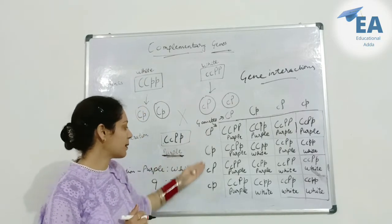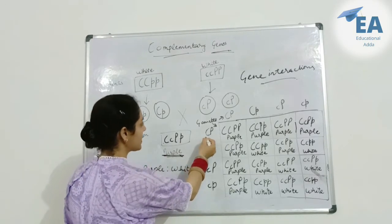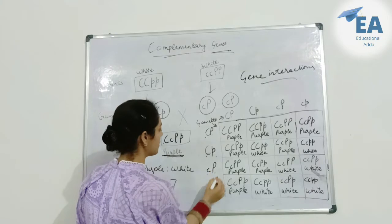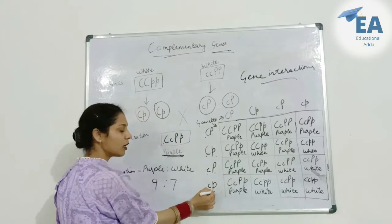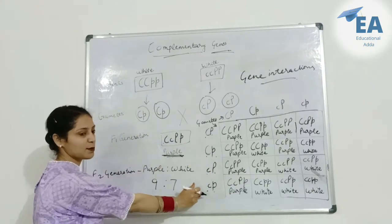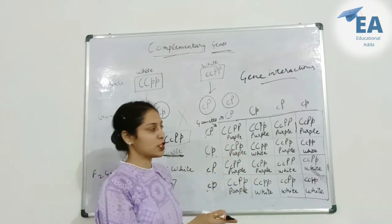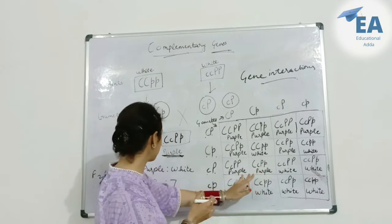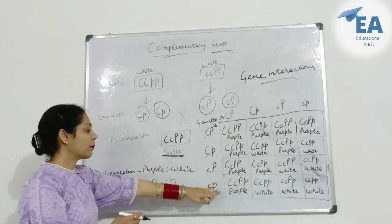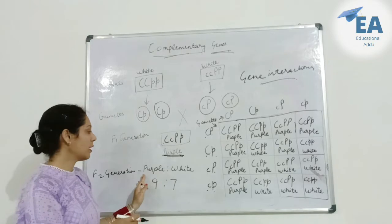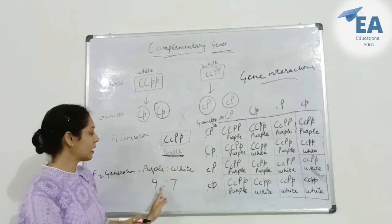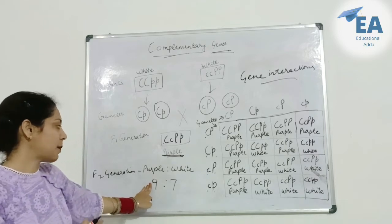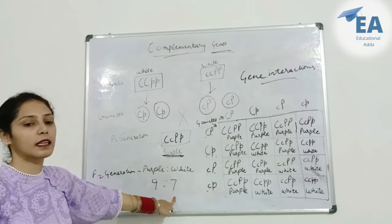In the F2 generation we have four gametes: CP, CP, CP, CP. From the selfing, we get purple and white flowers in a 9 to 7 ratio — nine with purple flowers and seven with white flowers.